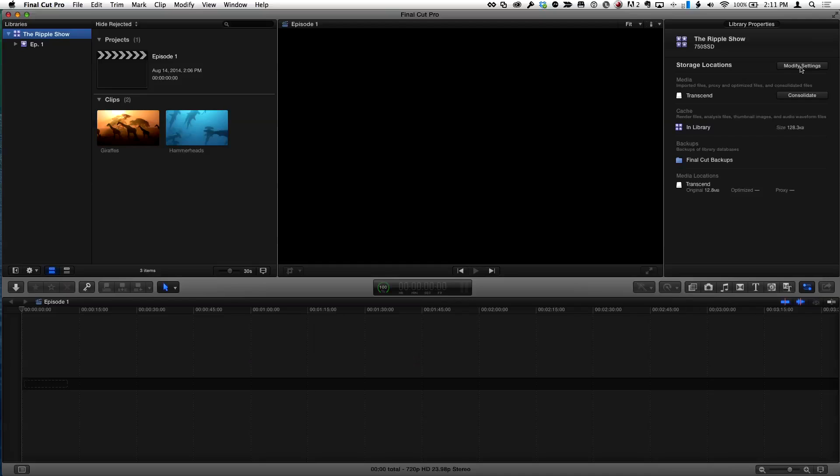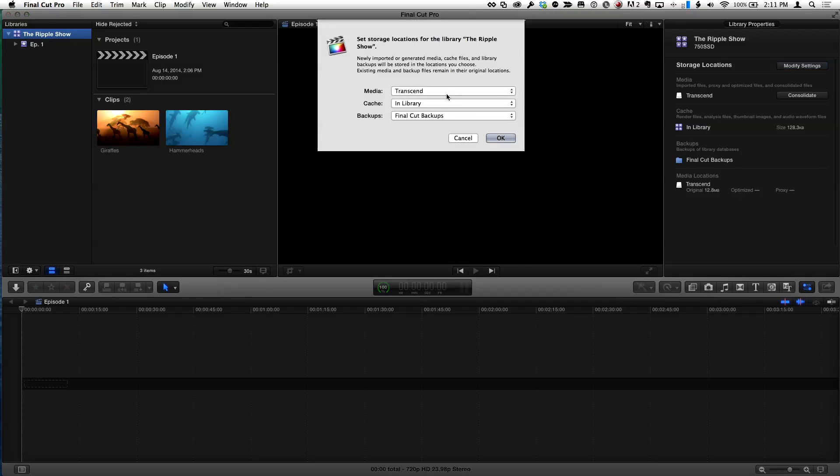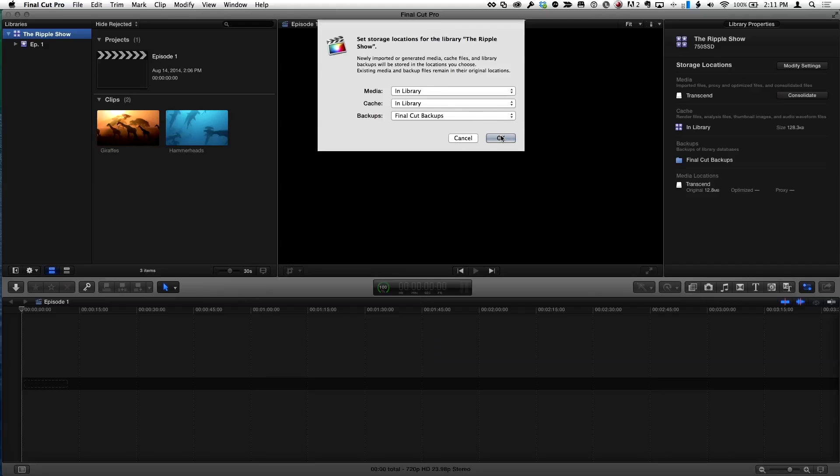Before I create the proxy media, you need to understand about Final Cut how flexible it is: you can create transcoded media, proxy or optimized, when you import or after. I'm going to go back to modify settings for the library and change the media location to in the library, which is on this drive. I can also choose another location on this drive or a little portable drive that I want to put the proxies on, wherever I want to put those proxies separate from the original media.